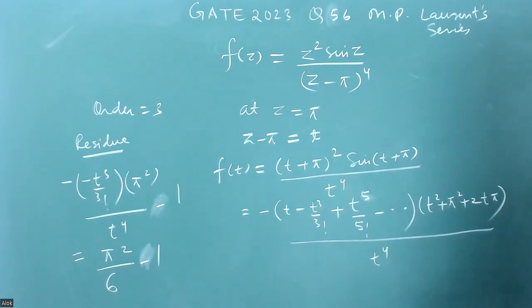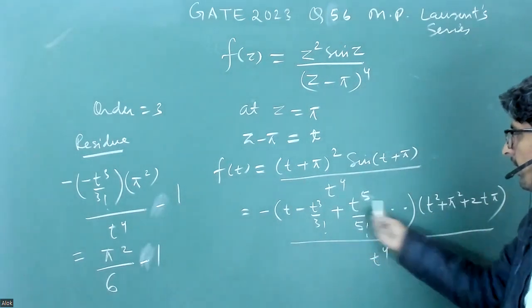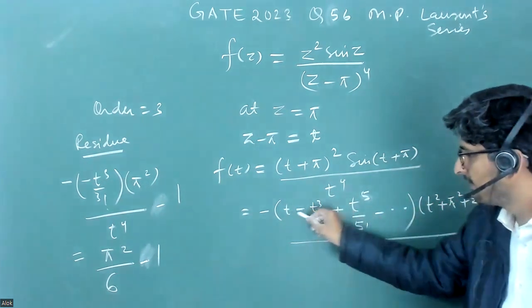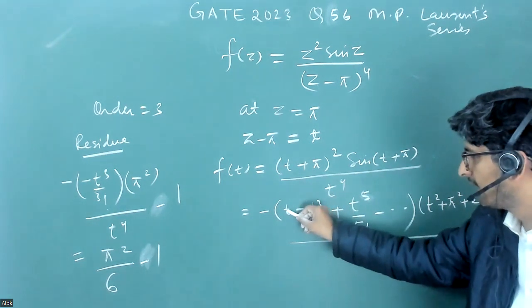Now for the order, what is the order of this? So when this pi square, what is the minimum power I can get is t.